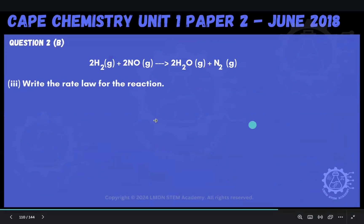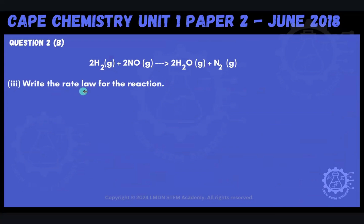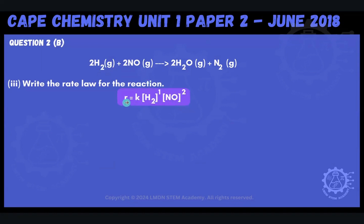Moving along, they're asking us to write the rate law for the reaction. The rate is equal to the rate constant K times the concentration of H₂ raised to the power 1 — because it's first order in H₂ — times the concentration of NO squared, because it's second order with respect to NO.